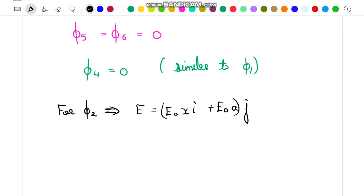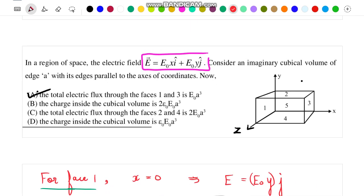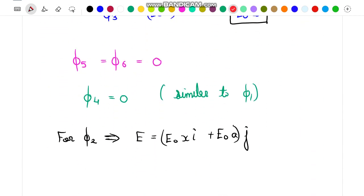Now we know that flux passing through face 2 will be due to only y component. Only the y component of field will be responsible for generating flux through face 2. So we can write flux through face 2 will be equal to the y component of field multiplied by its area, that is E₀a³.